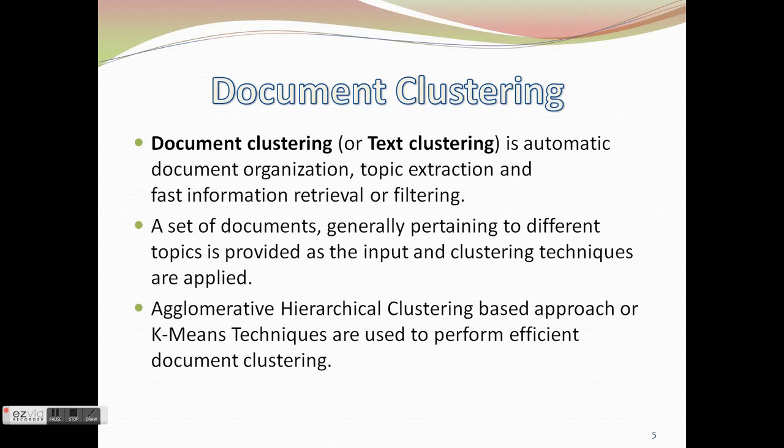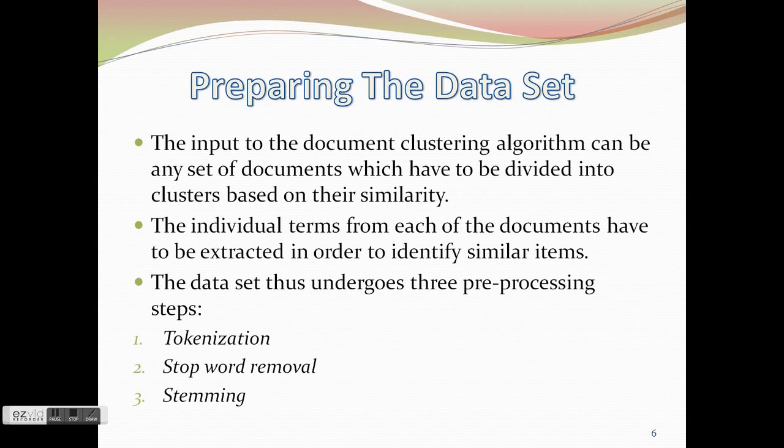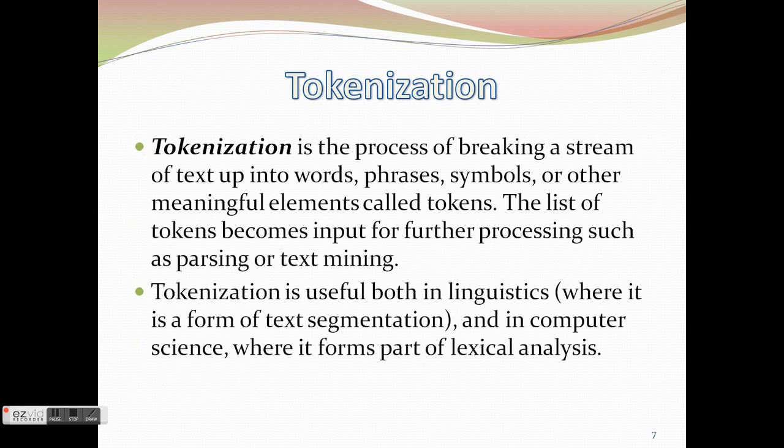Document clustering or text clustering is the first kind of clustering in which different text documents are placed together into related groups. Before clustering, the dataset is prepared, that is pre-processed by applying tokenization, stopword removal, and stemming steps. Apart from this, pruning can also be applied as a pre-processing step.